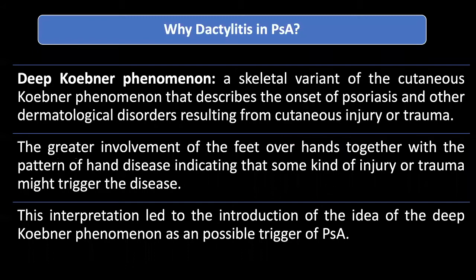Why does dactylitis happen in psoriatic arthritis? In psoriatic arthritis and psoriasis in general, there is a phenomenon called the Köbner phenomenon, which describes the onset of psoriasis and other dermatological disorders resulting from continuous injuries, scratches, or trauma. A variant called 'deep Köbner phenomenon' occurs at the level of musculoskeletal tissue. Dactylitis is more prevalent in the feet — which are more exposed to trauma — and when affecting the hand, it usually affects the dominant hand, the more active and injury-prone side. This led to the idea that dactylitis could be triggered by the deep Köbner phenomenon.